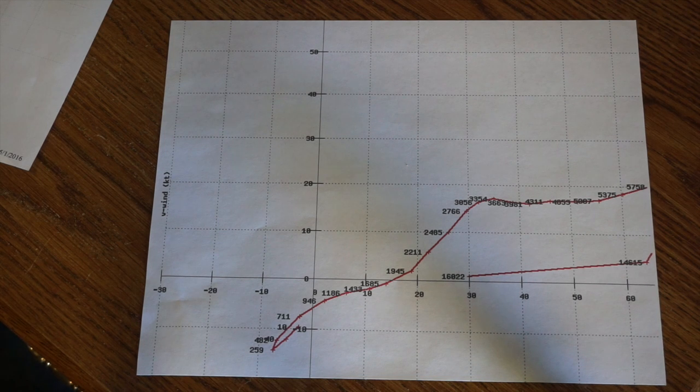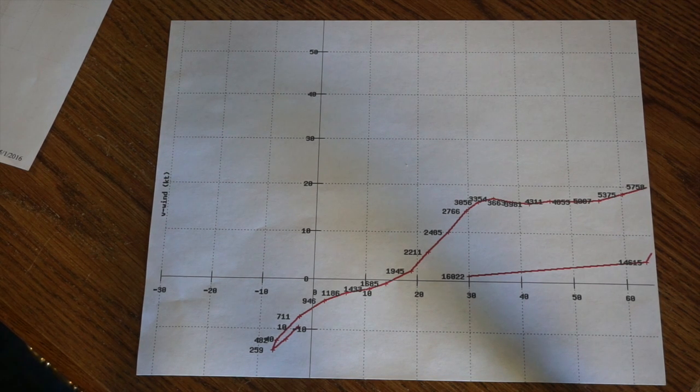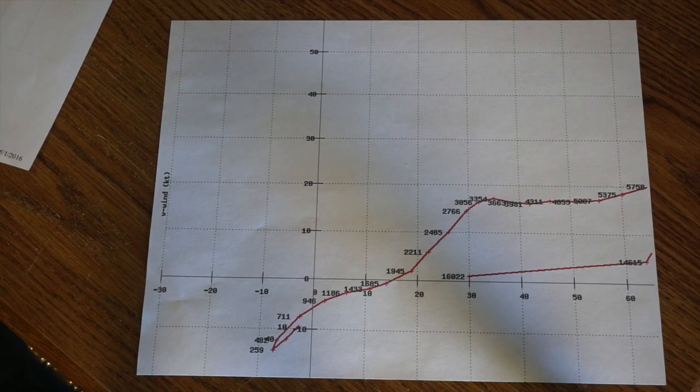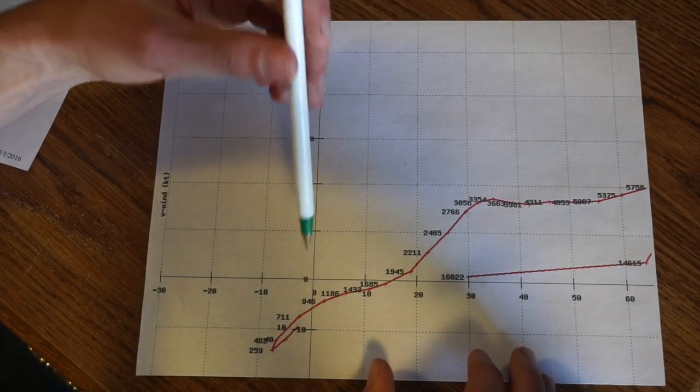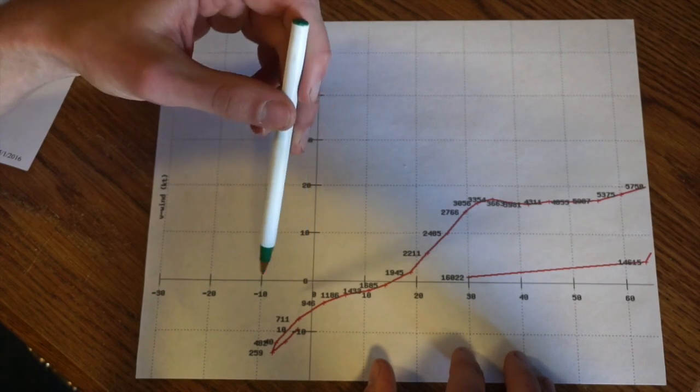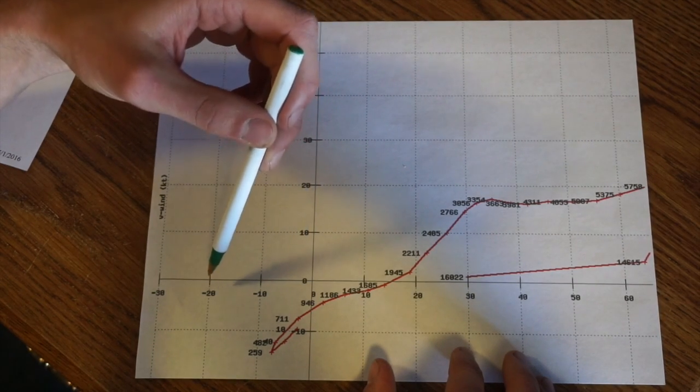A hodograph is simply a graph used to determine your wind speed and direction throughout levels of the atmosphere. So here you can see you have an x and y axis starting at zero and on it is labeled wind speeds in knots.